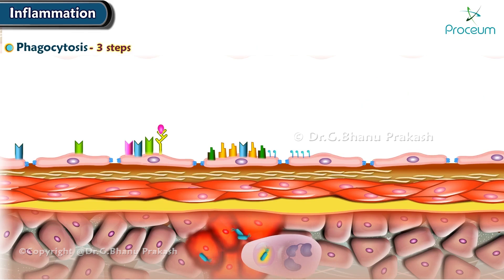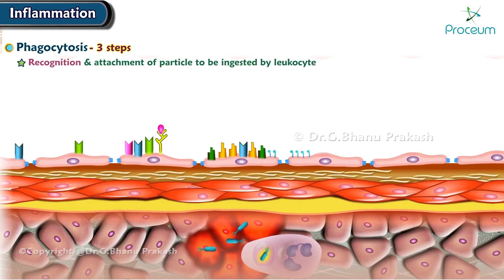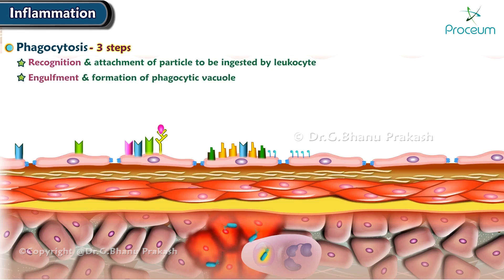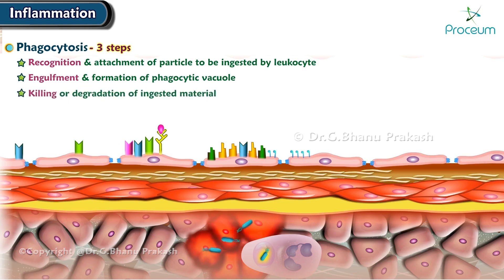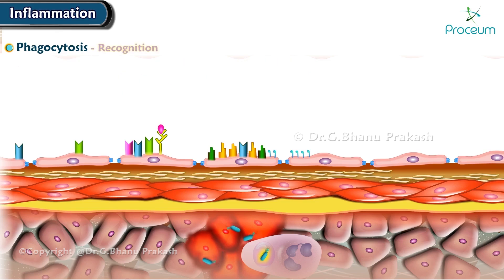Phagocytosis involves three steps. Step one: recognition and attachment of the particle to be ingested by the leukocyte. Step two: engulfment and formation of a phagocytic vacuole. Step three: killing or degradation of the ingested material. Let's go over these steps in more detail, starting with recognition.